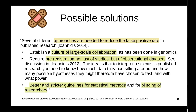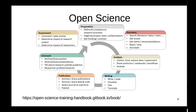Possible solutions were listed by Ioannidis in 2014: establish a culture of large-scale collaboration (as was done in genomics), require pre-registration of all studies and observational datasets, better statistical method guidelines, and blinding of researchers.